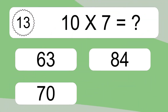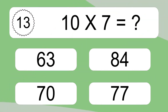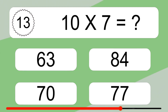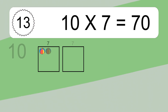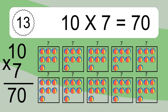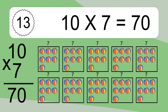10 times 7 equals what? 10 times 7 equals 70. We have 10 boxes, and each box has 7 colorful balls inside. If you count all the balls in all the boxes together, you will have 10 times 7 balls. This equals 70 balls.